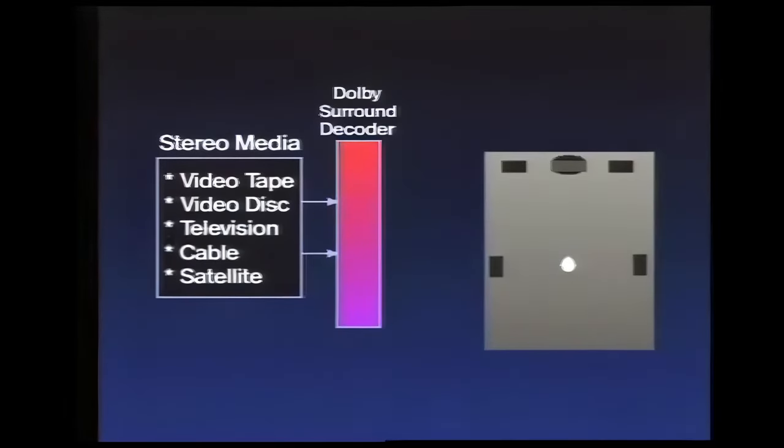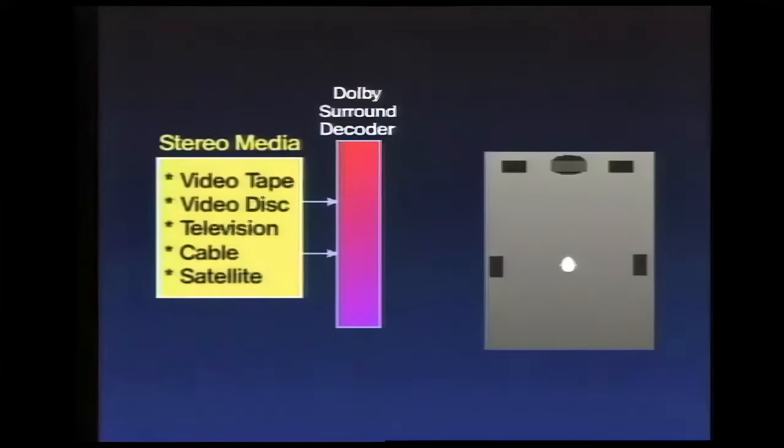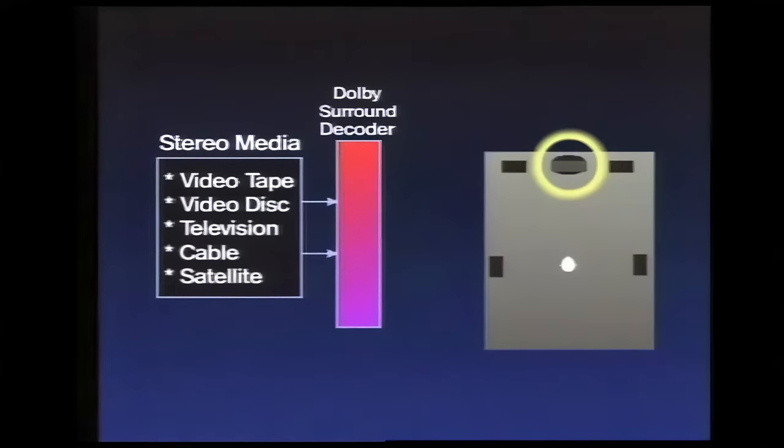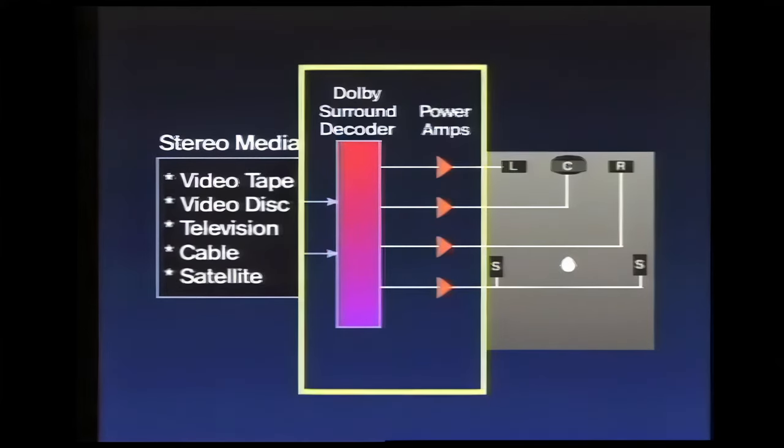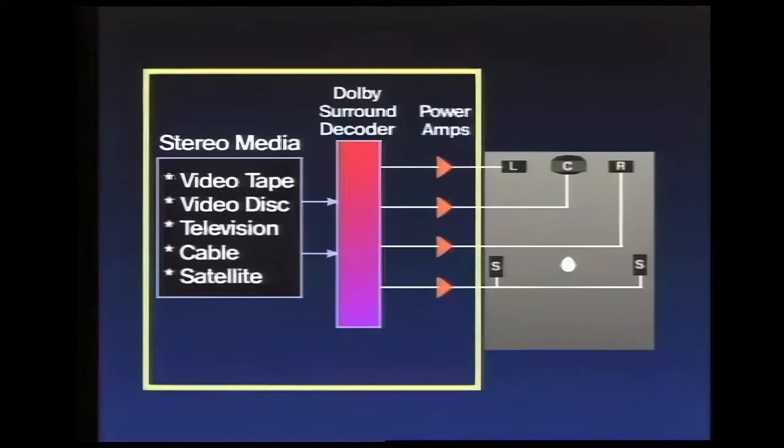Your overall audio video system will include the following components: a video program source with stereo audio, a video screen, a Dolby Surround decoder, and amplifiers and speakers for the left, right, and surround channels. ProLogic decoders will need one more amplifier and speaker for the center channel. These electronics are available as separate components, combined into integrated units, or completely inside TV sets.